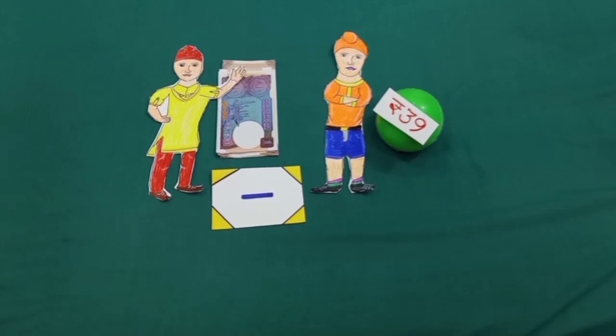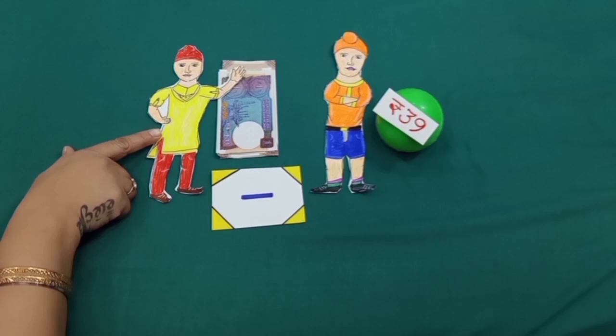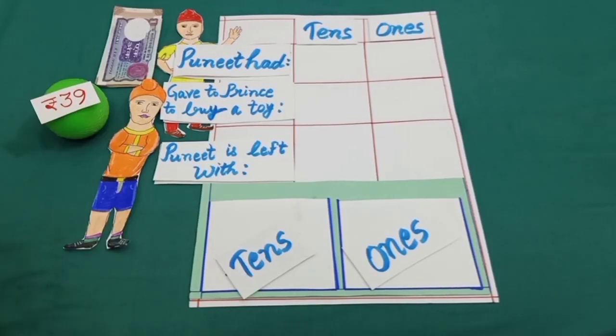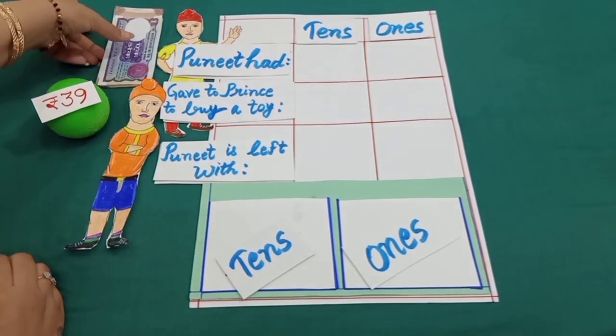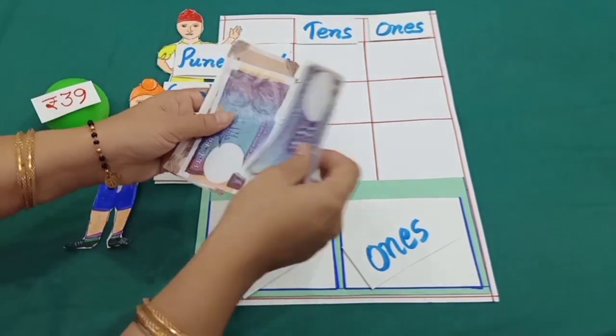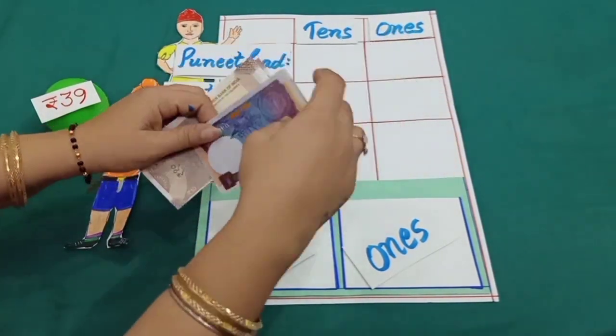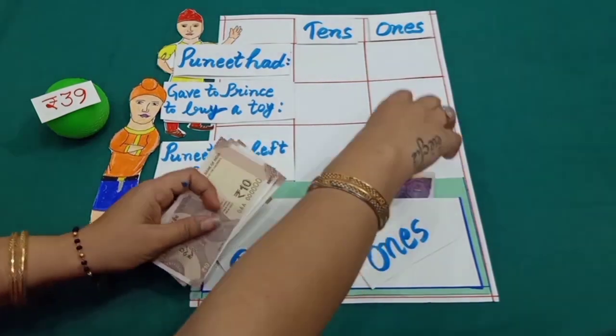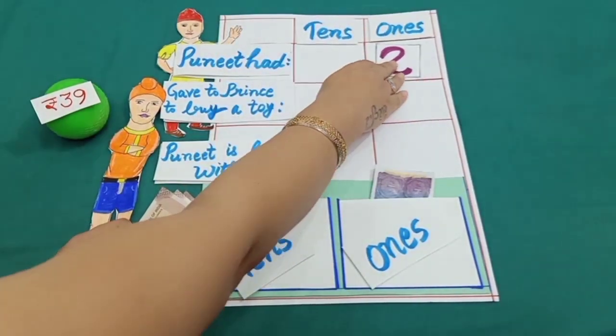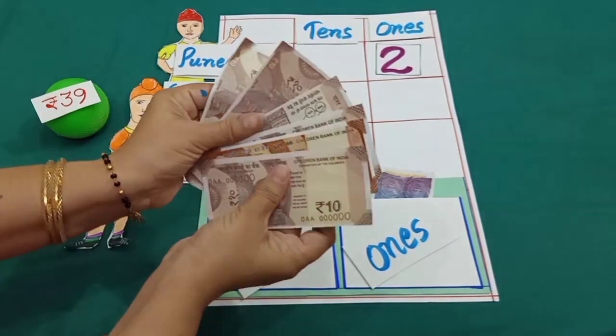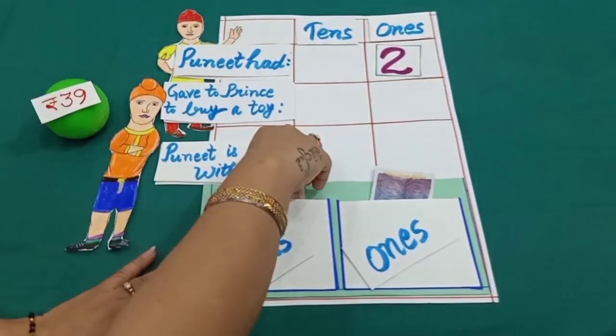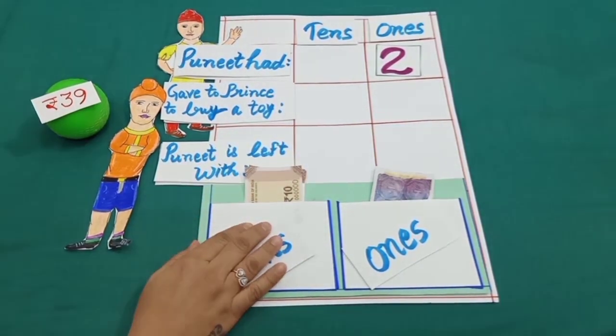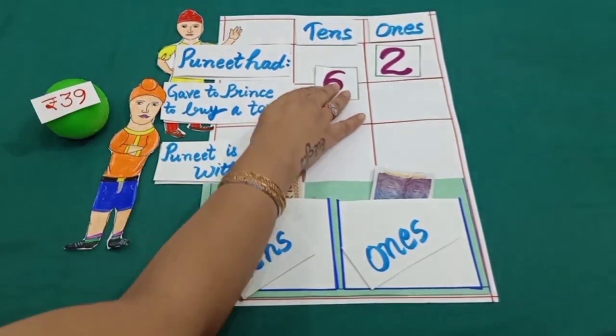Dear students, today we will find how much money is left with Puneet. Puneet had 62 rupees. Two notes of rupees 1 means 2 ones, and 6 notes of rupees 10. That is equal to 60 rupees, and 60 is equal to 6 tens.